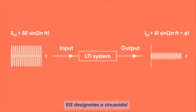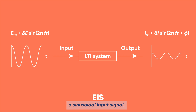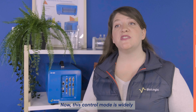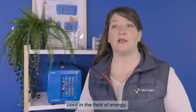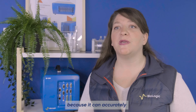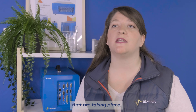EIS designates a sinusoidal or AC control mode. The potentiostat applies a sinusoidal input signal — either current or voltage — at various frequencies, and then measures the dynamic response of the system. This control mode is widely used in the field of energy, such as batteries and fuel cells, and for corrosion, because it can accurately and rapidly provide a detailed description of the system and the mechanisms of the electrochemical reactions taking place.